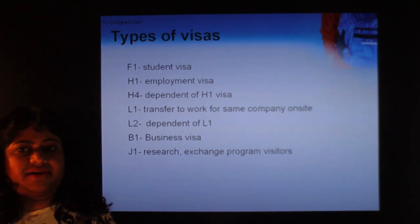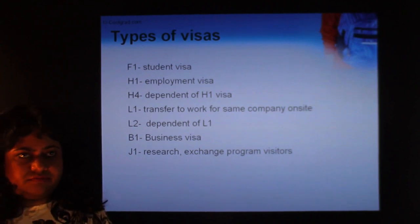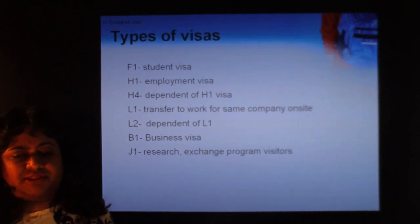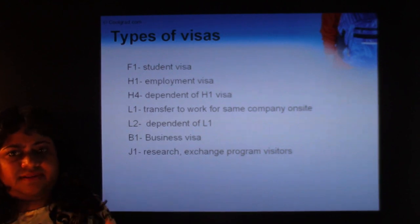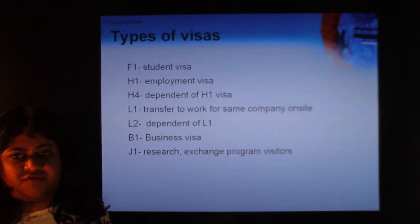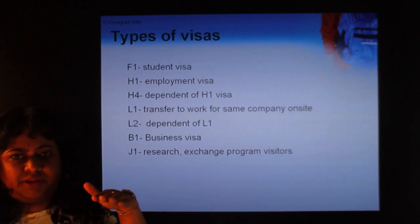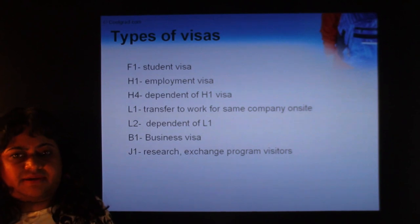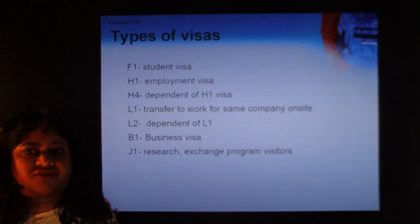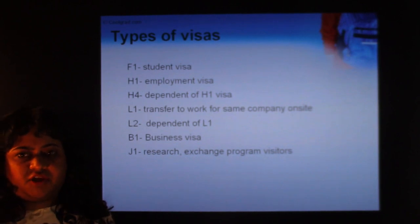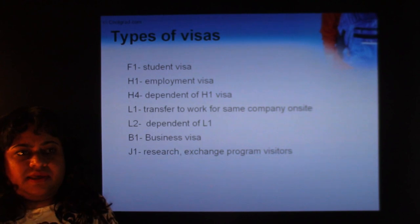EB-1 is for PhDs and people with highly specialized skills who can apply independently and typically get a green card within three to six months. EB-2 is for master's degree holders or those with equivalent qualifications, and they get a green card faster than EB-3. EB-3 is for bachelor's degree holders and takes much longer. It's generally good to have a master's degree because it sets you apart — it's easier to get a visa, a green card, and a job.